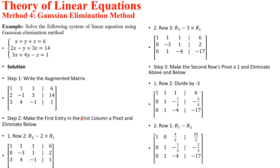We want to make this the pivot. We use it to perform row operations on the second row. For Row 2, the new Row 2 will be Row 2 minus 2 times Row 1. In order to eliminate this element in the first column, we multiply 2 to Row 1 and subtract from Row 2. So 1 times 2 gives us 2, and 2 minus 2 gives us 0.